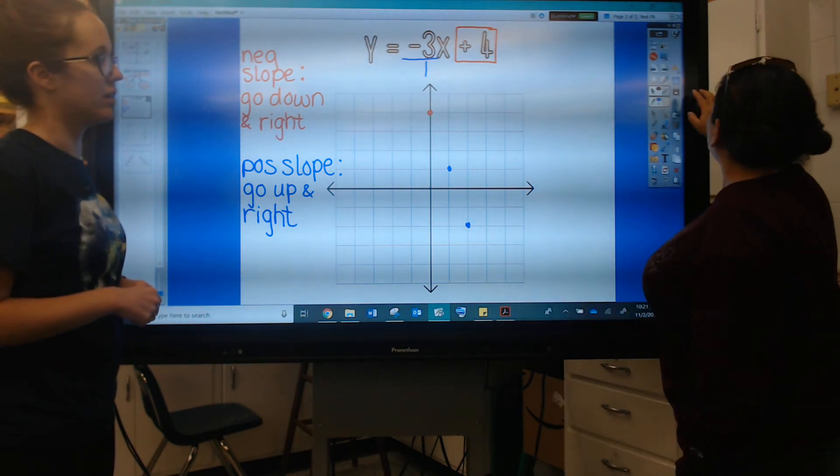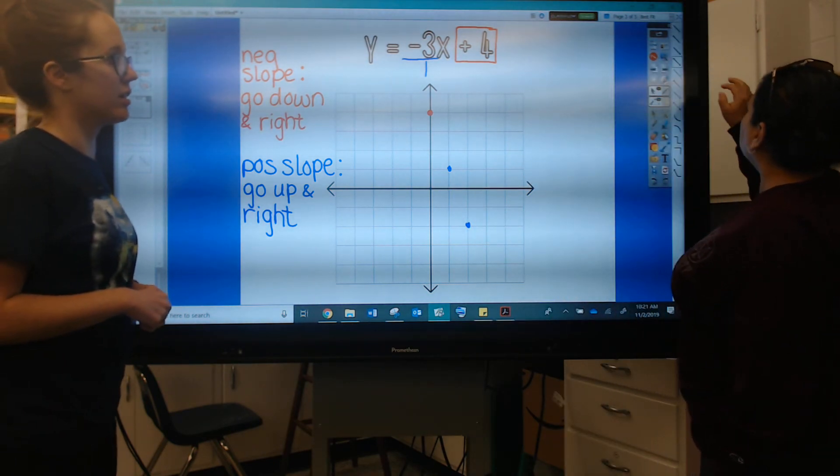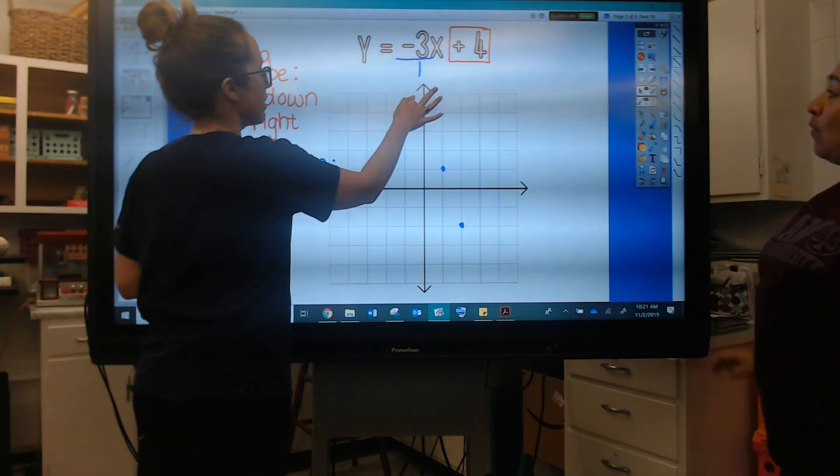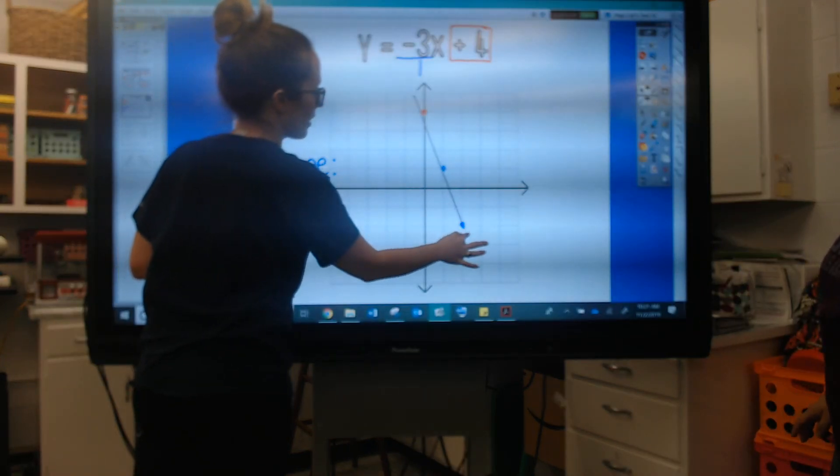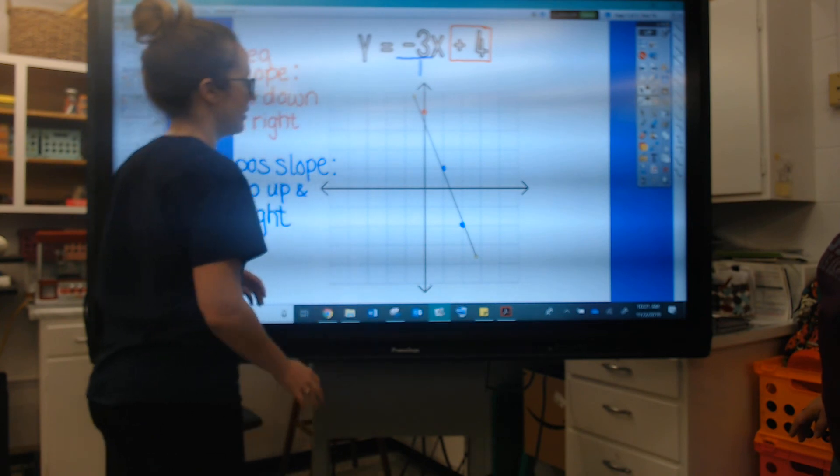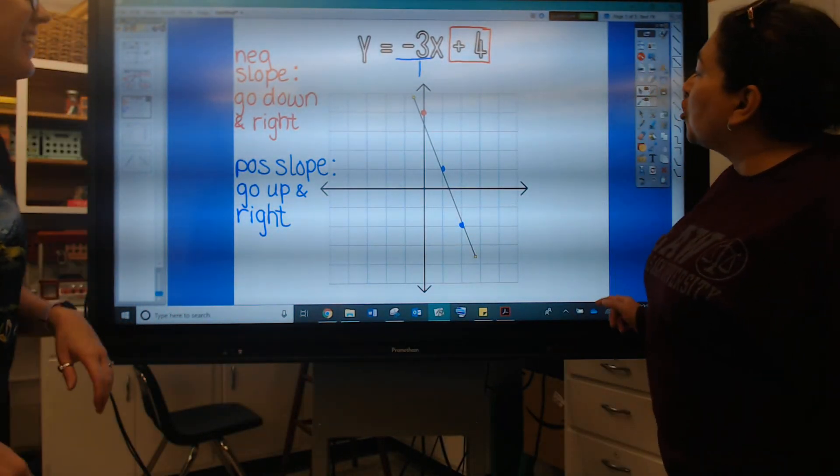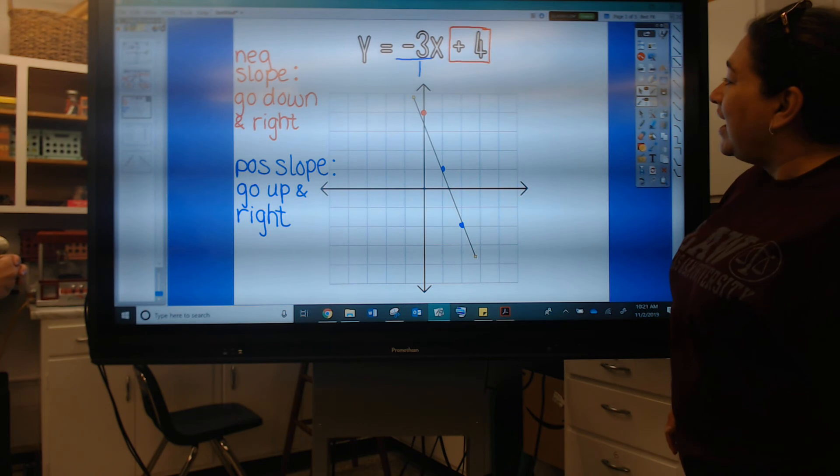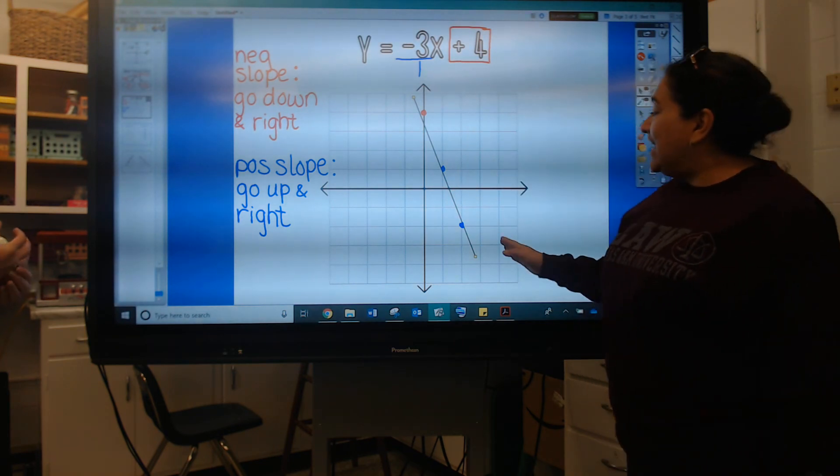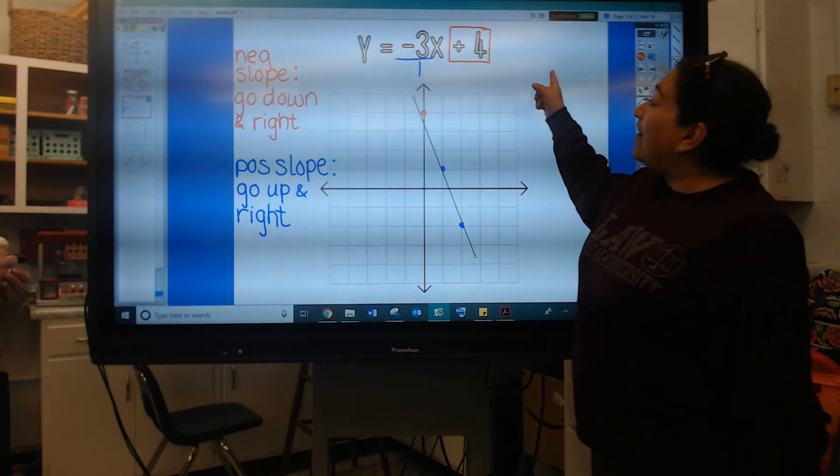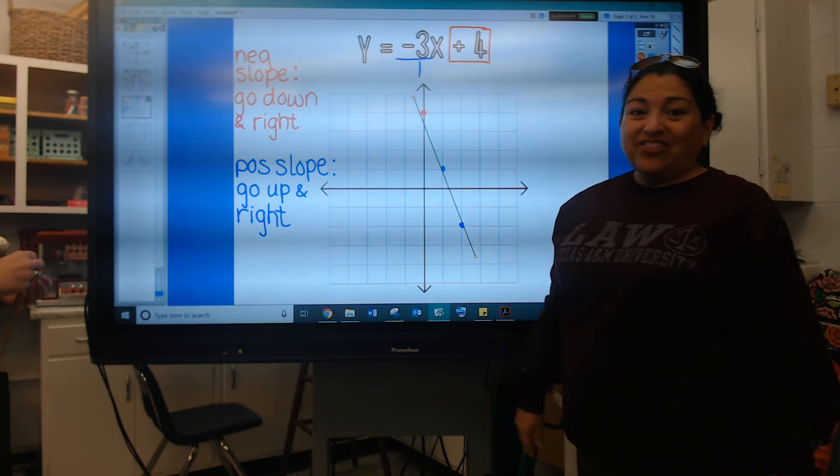Okay so then we're going to come over here and grab our line. Go ahead Miss Vincent and we're going to draw that line touching oh well kind of. It's pretty close. All three of those points. Okay that makes this a negative slope and you have just graphed this equation.